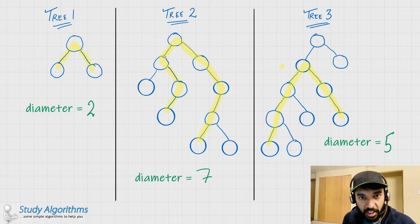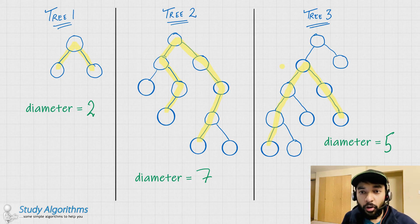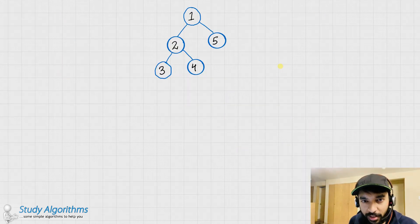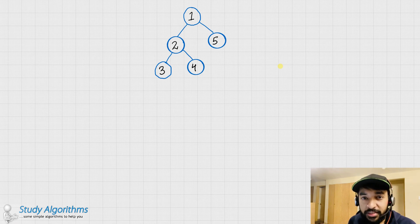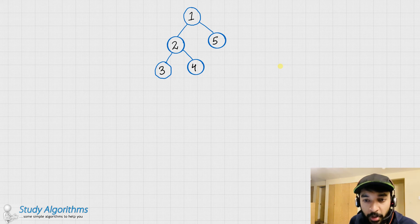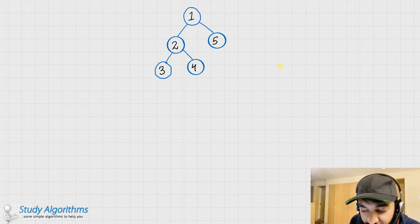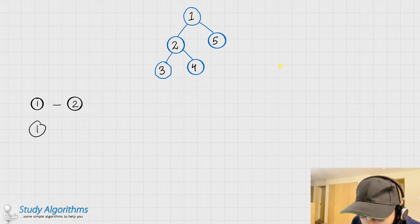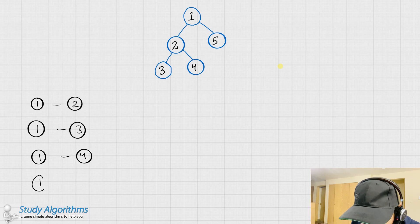As per the problem statement, you are given a binary tree and you are required to tell me the length of the diameter. Let us see how we can go about solving this. A good way to solve any problem is to come up with a solution first and then try to optimize it. The first solution that comes to mind is: what if I just find the distance between each of the nodes of the binary tree? Let us say 1-2, 1-3, 1-4, and 1-5.